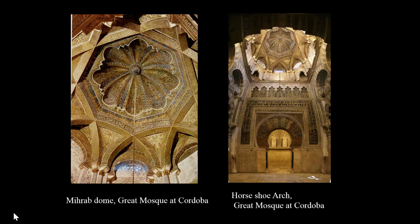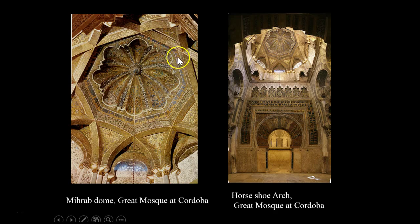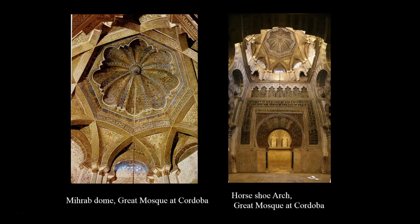This is the mihrab dome — the dome over the qibla wall — and then you have the niche, the mihrab. Note the horseshoe arch — it's really quite beautiful and very intricate. Above the mihrab is an equally dazzling dome built of crisscrossing ribs that create pointed arches, lavishly covered with gold mosaic in a radial pattern. This astonishing building technique anticipates later Gothic rib vaulting, which we'll talk about later.